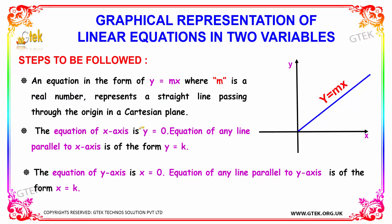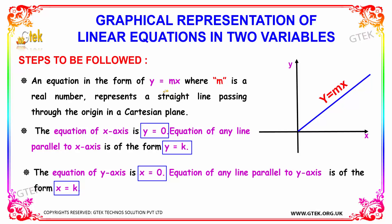The equation of the x-axis is y equal to 0, and the equation of any line parallel to the x-axis is of the form y equal to k. The equation of the y-axis is x equal to 0, and the equation of any line parallel to the y-axis is of the form x equal to k. These are the key steps to keep in mind when solving problems based on linear equations in two variables.